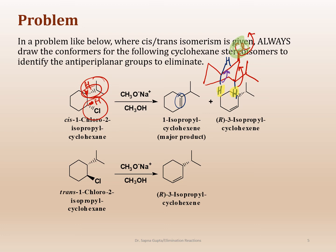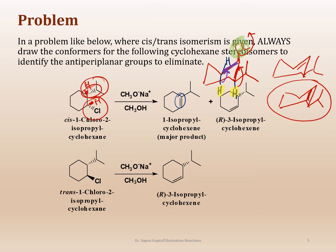Once you have those eliminations going on, the first hydrogen gives you a double bond in one position, and the second hydrogen gives you a double bond in another position. The propyl group is still there going up. For one product, the double bond is next to the propyl group - that's the first product. For the other, the double bond is away from the propyl group. That is how these two products came about. You find the anti-periplanar hydrogen - that's what happened starting from the cis isomer.